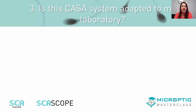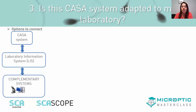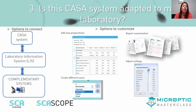The third question: is this CASA system adapted to my laboratory? The idea is to know if the CASA system you choose is compatible with your laboratory information system. For example, if you have peripheral laboratories, you will need the CASA system to offer the option to install complementary systems in the centralized one. Check if you have the possibility to customize and add new preparations at different times, create different users with different roles, customize reports and adjust settings. Look for a truly flexible system.